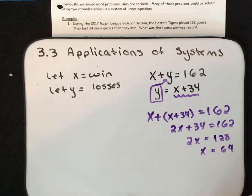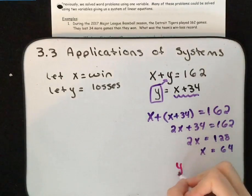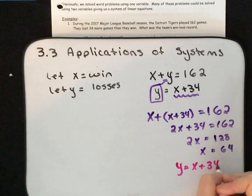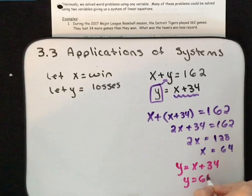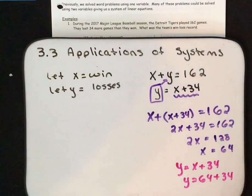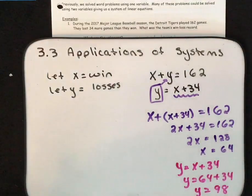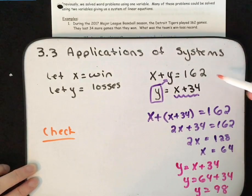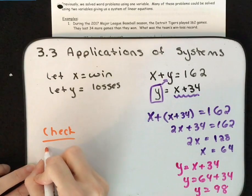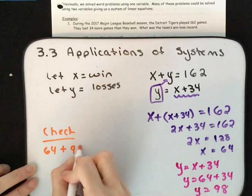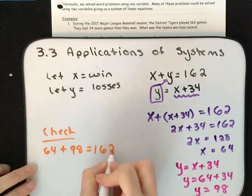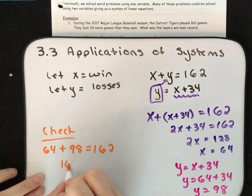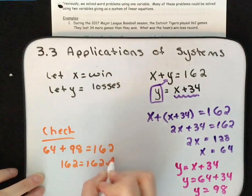But that doesn't tell us how many they lost. We're told Y equals X plus 34. We just found that X equals 64, so Y equals 64 plus 34, which is 98. So they lost 98 games. Now let's do a quick check using our first equation: 64 plus 98 is 162. That checks out.